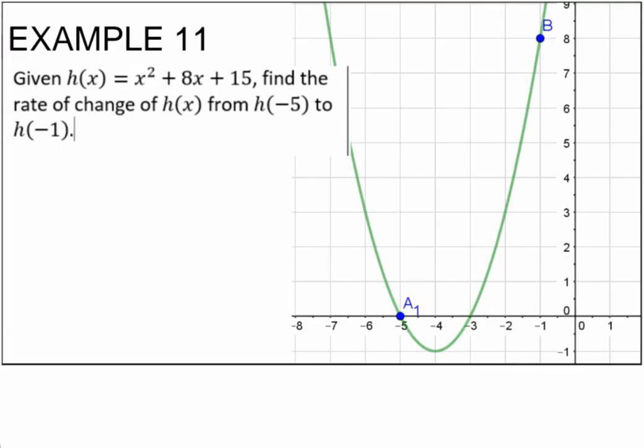In example 11, we need to find the rate of change for x squared plus 8x plus 15 from the interval from negative 5 to negative 1.